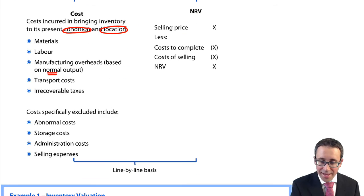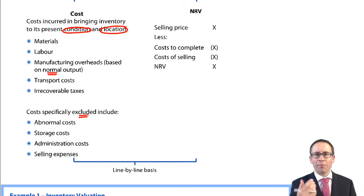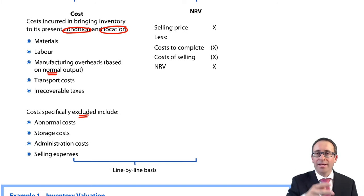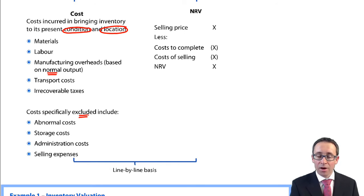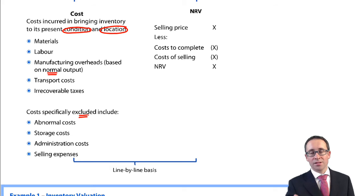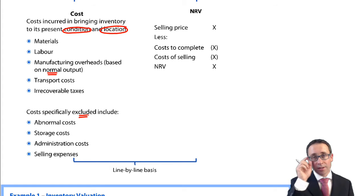Costs specifically excluded are abnormal costs — anything not expected as part of the production process — which are expensed through profit or loss. Storage and warehousing costs are also excluded because the inventory is already in its location; it's only the cost of getting to the location that counts. Admin overheads are not manufacturing overheads, so they are excluded. Selling expenses are relevant but form part of the NRV, not the cost, because they are incurred after the goods are in their condition and location ready to be sold.